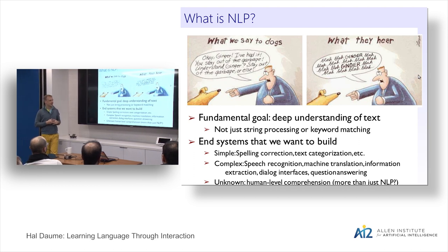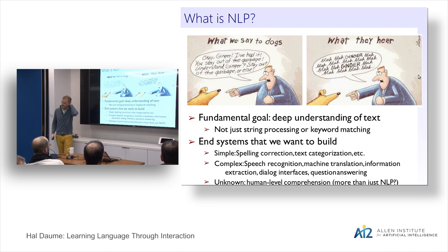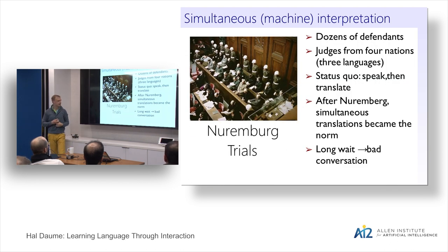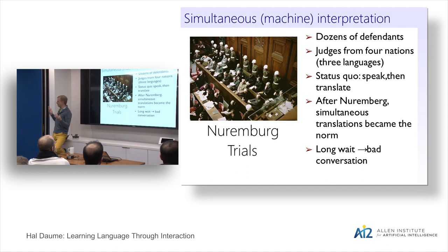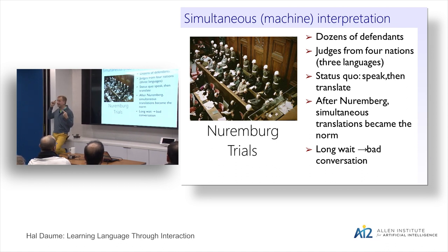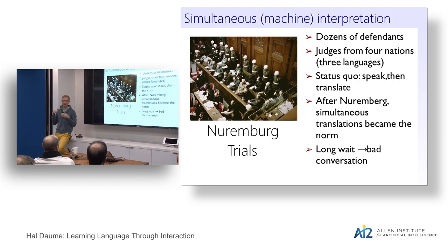The first thing I'll talk about is some machine translation work — specifically, a simultaneous interpretation project we've been working on for three or four years, mostly with Jordan Boyd-Graber at the University of Colorado. Human simultaneous interpreters are amazing: they hear speech in one language and produce speech with as little delay as possible in another language. It's this weird, almost subconscious process — if you quiz them afterwards on what was discussed, they only have a vague recollection of the topic.